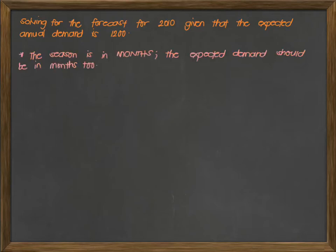In this case, the season given in the problem is in months and the expected demand should be in months as well. Now, the expected monthly demand is your 1,200 divided by 12, signifying 12 months in one year. This will give us 100 units. Our expected monthly demand is 100 units. Now we can proceed with computing for the forecast for each month.